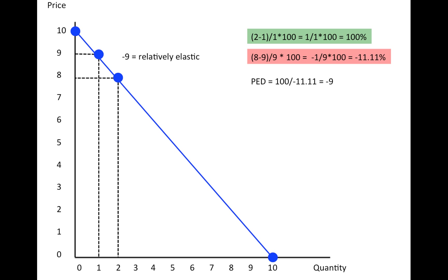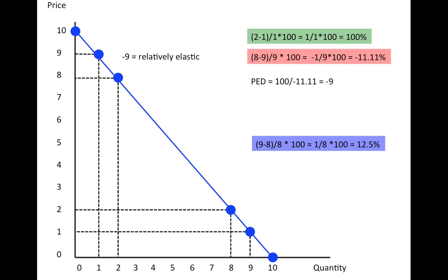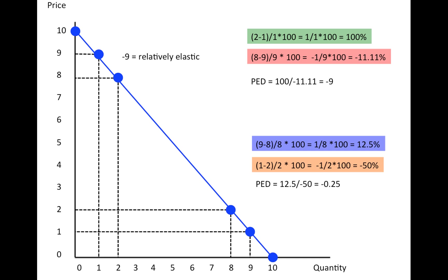Then we do the next one. If we reduce the price from 2 to 1, that means the quantity has increased by 1 unit, from 8 to 9 — in percentage terms, 12.5% — and the price has reduced from 2 to 1, which means the price has reduced by 50%. The PED is equal to minus 0.25, which is relatively inelastic.